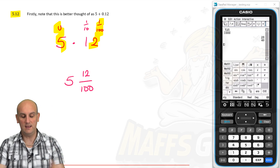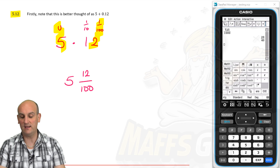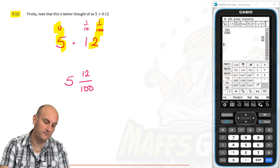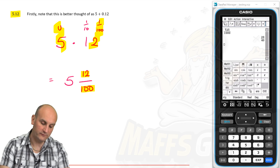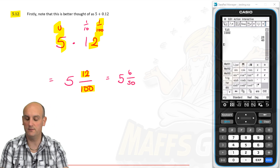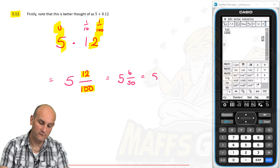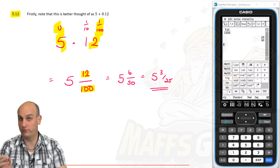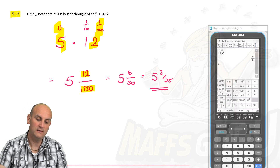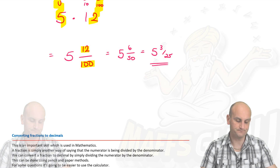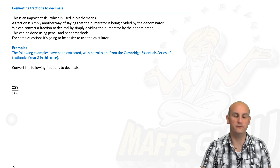The whole number 5 stays as is — it's a mixed number. Is 12/100 in simplest form? No — both are even, so half of 12 is 6 and half of 100 is 50, giving 5 and 6/50. Both still even: half of 6 is 3, half of 50 is 25, giving 5 and 3/25. Does 3 go into 25? No — so that's our answer: 5 and 3/25.